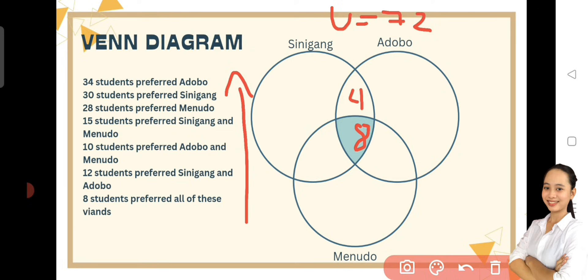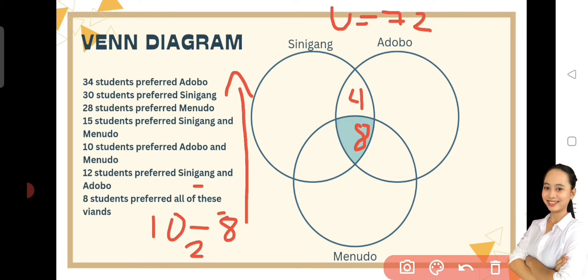Sunod naman yung 10 students preferred Adobo and Menudo. Yung 10 ba isusulat agad natin siya sa intersection ng Menudo and Adobo? Siyempre hindi, kasi yung 8 pasok siya sa intersection ng Menudo and Adobo — kasi nga yung 8, intersection siya ng lahat. Kung kaya, gagawin natin is 10 minus 8 is equals to 2. Yung 2, yan yung intersection ni Menudo and Adobo.